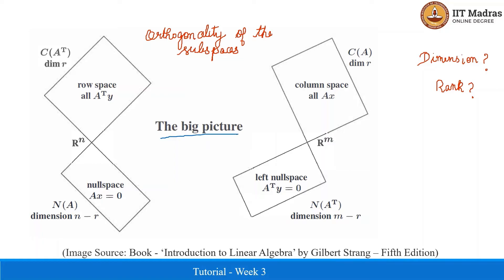Let us take a look at the big picture that shows the subspaces in R^n and R^m. This picture reveals the orthogonality of the subspaces. If you have two vectors V and W, they are orthogonal if they are perpendicular to each other. The null space and the row space are orthogonal, meaning every vector x in the null space is perpendicular to every row of A. Similarly, the left null space and the column space are orthogonal subspaces — every vector y in the left null space is perpendicular to every column of A.